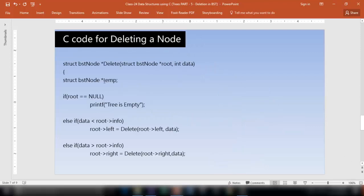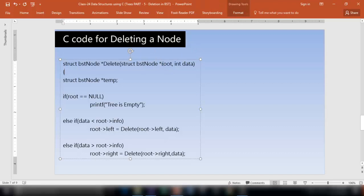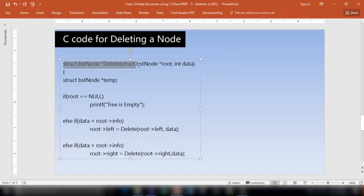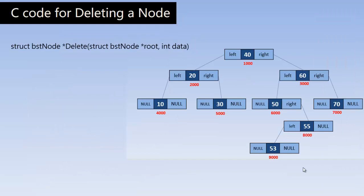Here is the code for deleting a node. The delete function takes two arguments: the address of the root node and the data which is going to be deleted. It returns the address of the deleted node. This function is of type struct BST node pointer because it returns the address of the deleted node. Notice the asterisk before its name — it takes two parameters: the address of the root pointer, which holds the address of the root node, and the data to be deleted.